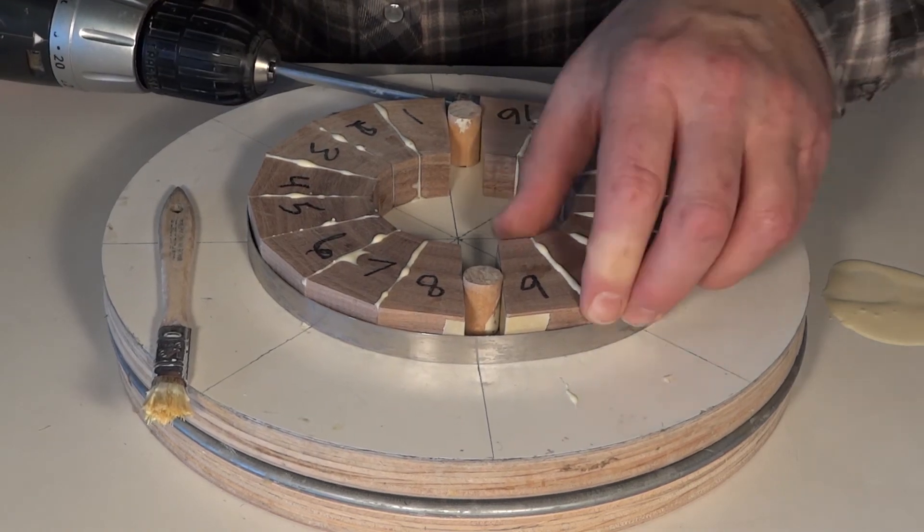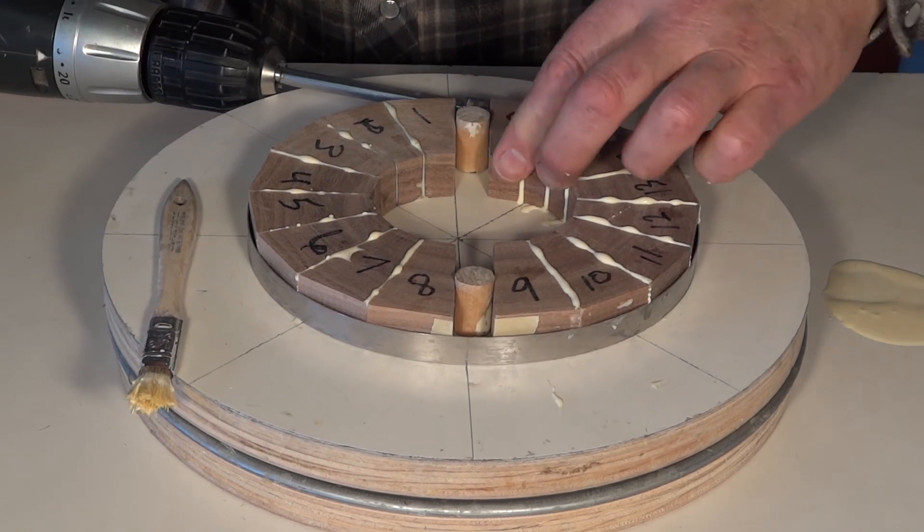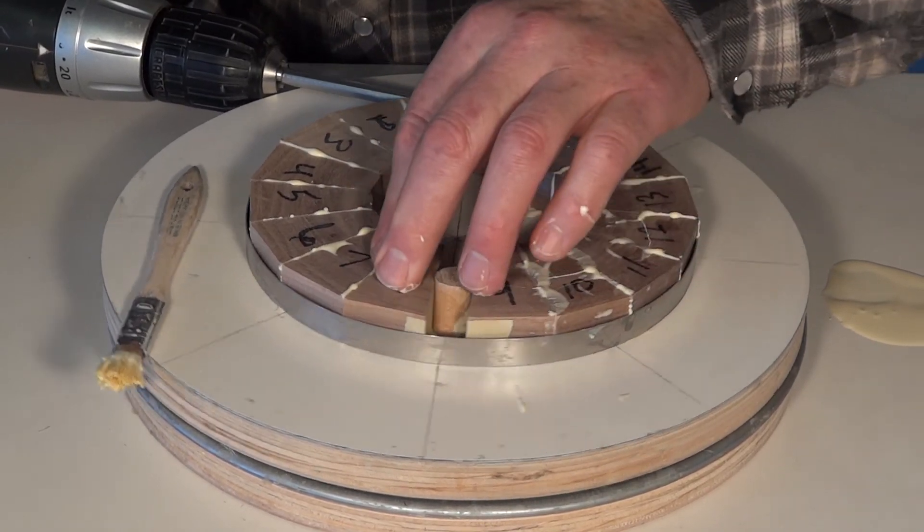Once the glue is spread on all the joints, it's just a matter of putting the hose clamp on and tightening it. Tighten it a few times as the glue will continue to migrate out of the joint while it is under pressure.